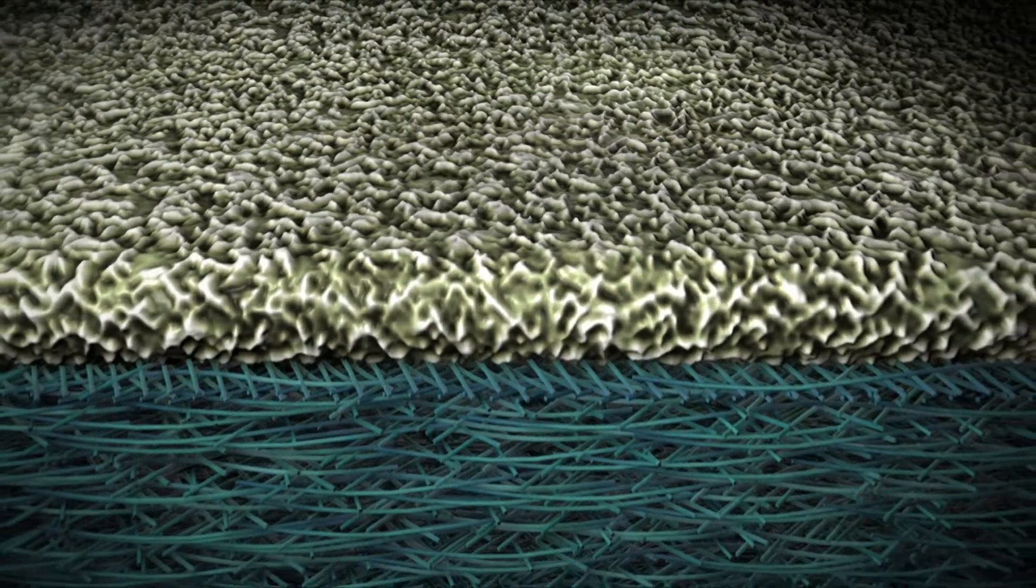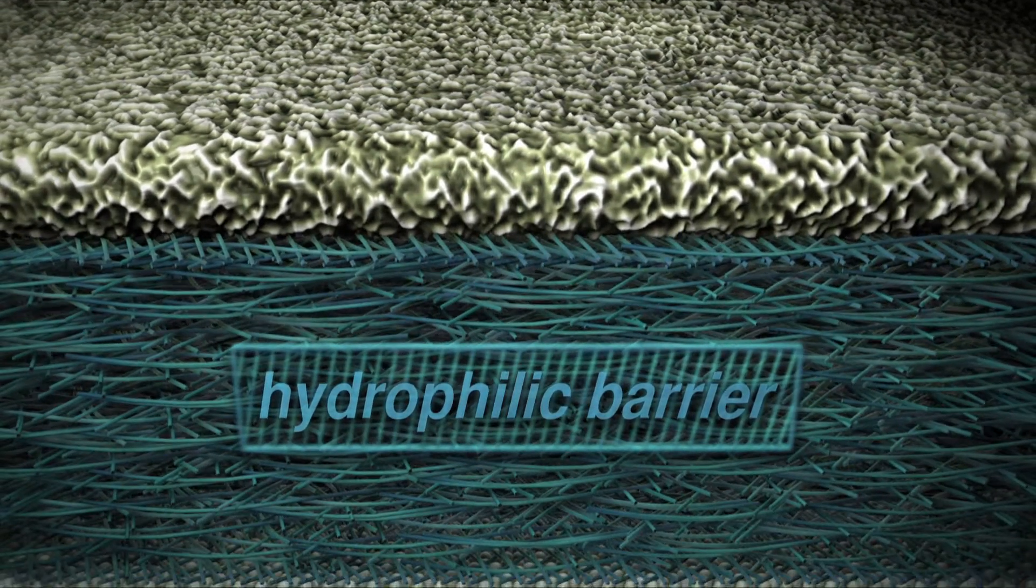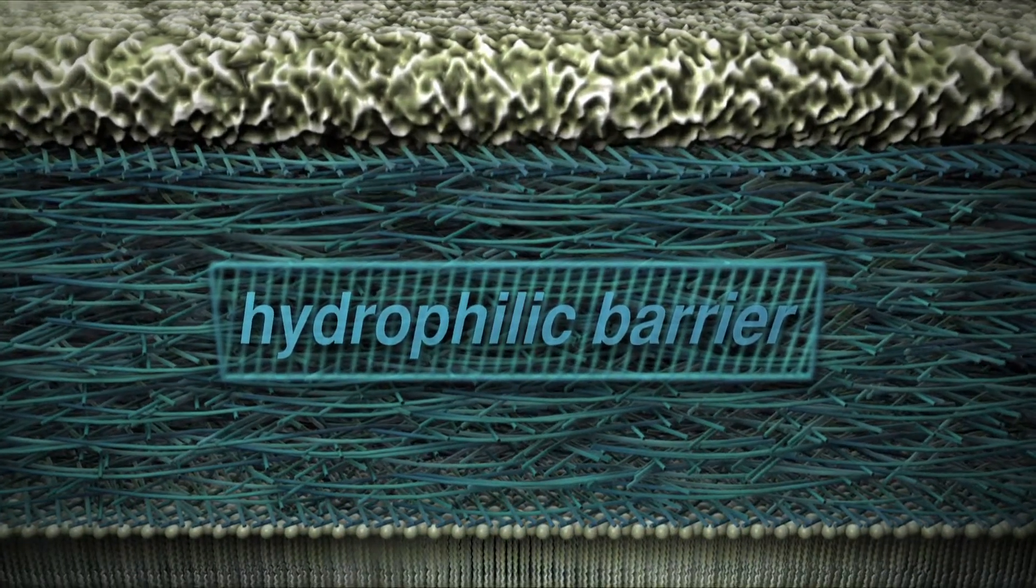However, the walls of plant cells are hydrophilic, that is, only slightly permeable to fat-soluble substances.